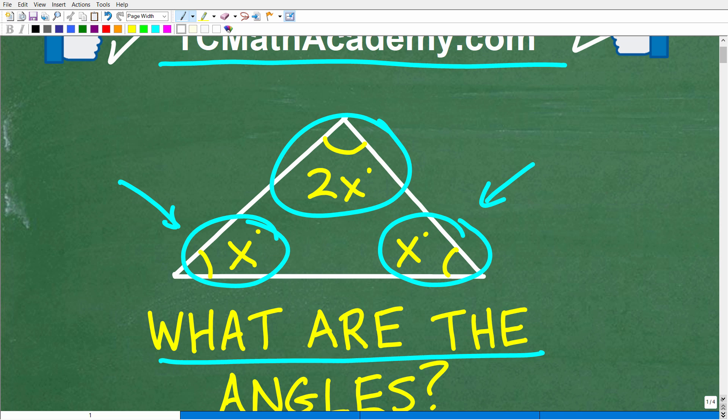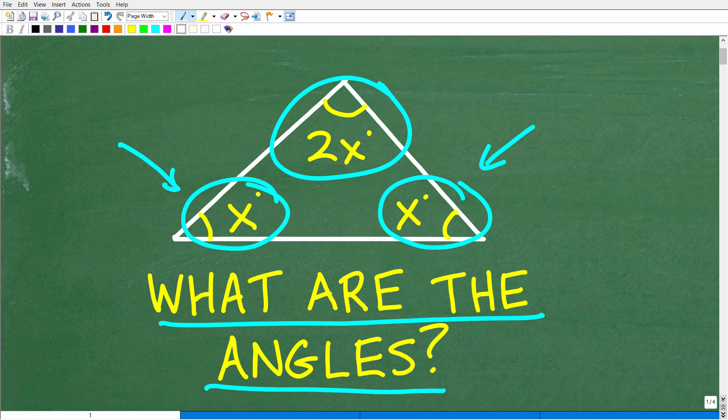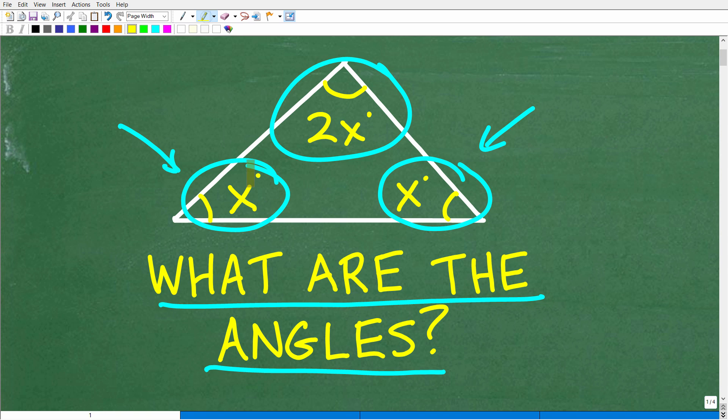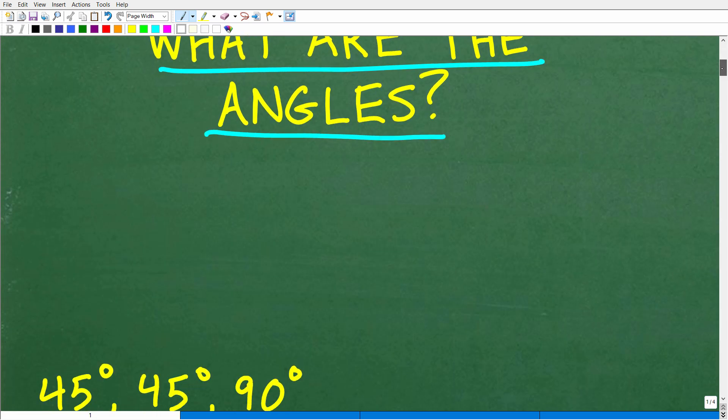All right, so pretty straightforward question here. We are looking for the three angles of this triangle. Remember, this angle and this angle are the same angle. And this angle here is double these angles. So what are the angles? Let's go ahead and take a look at the answer.